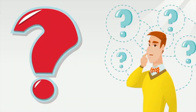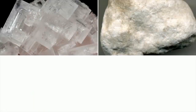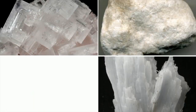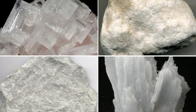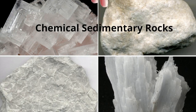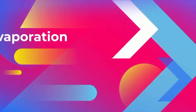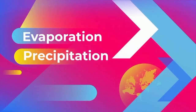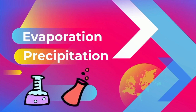What do these rocks have in common? Halite, gypsum, anhydrite, and limestone — they are all chemical sedimentary rocks. These rocks typically form from either evaporation or precipitation of mineral-rich waters. Let's take a look at two demonstrations that will help you understand how chemical sedimentary rocks form.